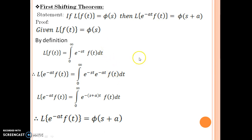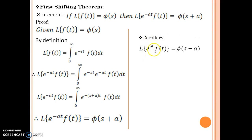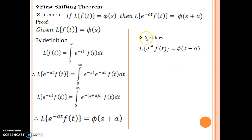Let us see a corollary to this. The corollary says: if Laplace of f(t) is phi(s), then Laplace of e to the power at times f(t) is nothing but phi of s minus a. You just have to replace minus a with a and it is done — it is easy.